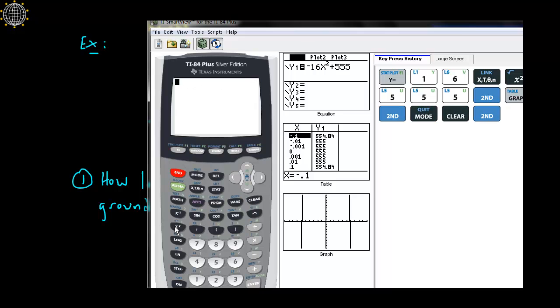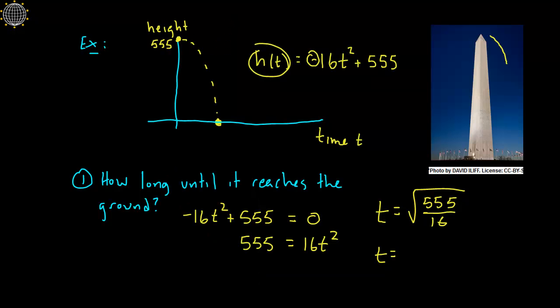So I'll find that out real quick here. Let's see, square root of 555 divided by 16, 5.89 seconds approximately.